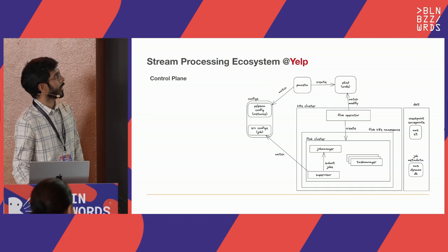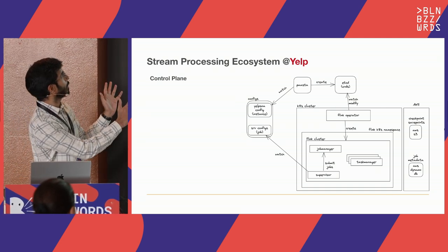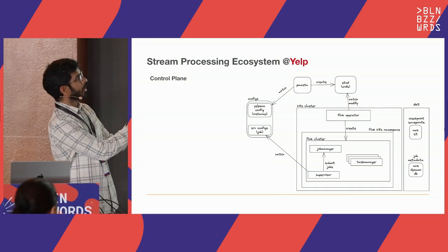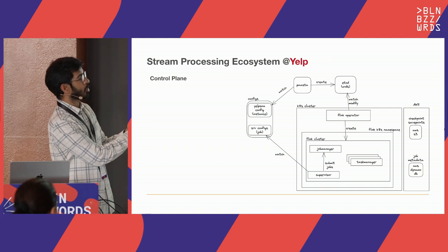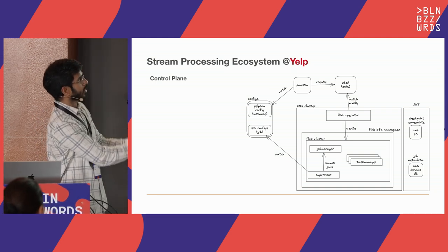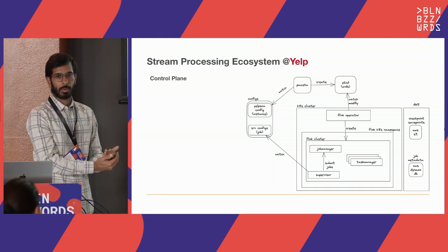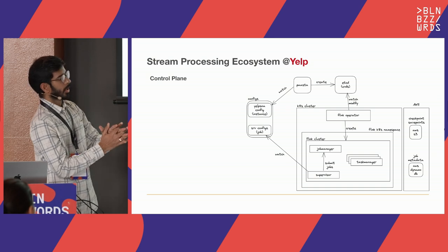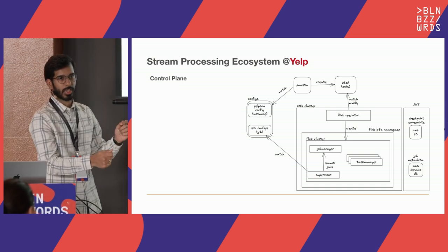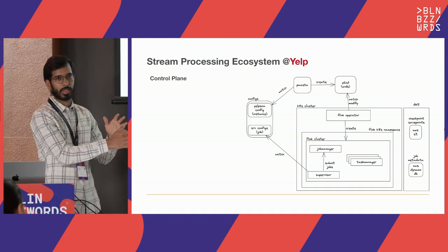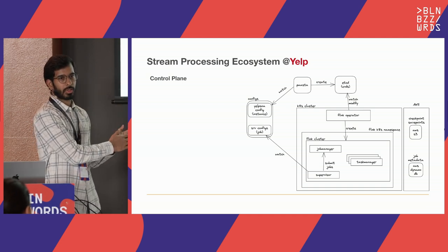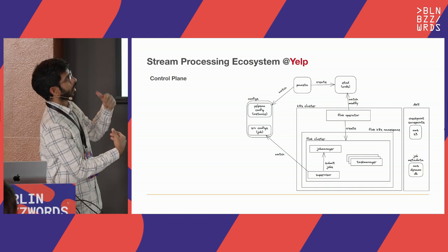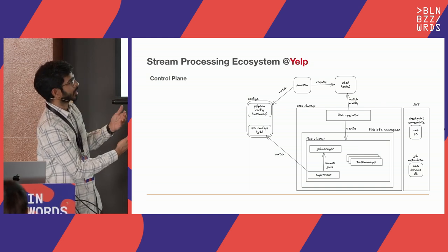Starting with the stream processing ecosystem at Yelp, I've broken the system into two parts. The first part is the control plane — what the deployment of the ecosystem looks like. We use Flink for our stream processing pipelines and Kubernetes to deploy those clusters. We have Pasta, our own in-house infrastructure-as-a-service offering. For deploying any streaming app, you have a Yelp-specific service-oriented architecture config where you define your service-specific configurations. Pasta looks at that, creates Kubernetes custom resources, puts them into ETCD, and then we have our own custom Flink operator which creates Flink clusters.